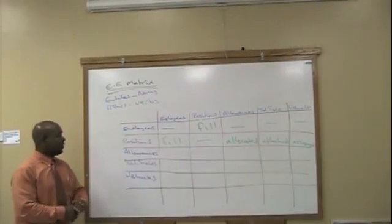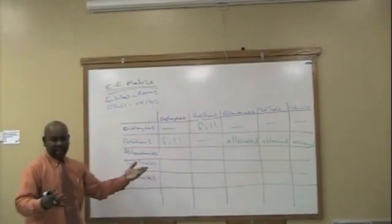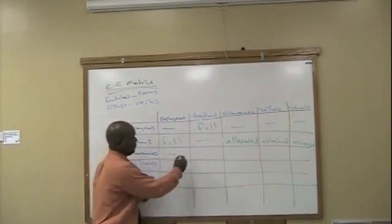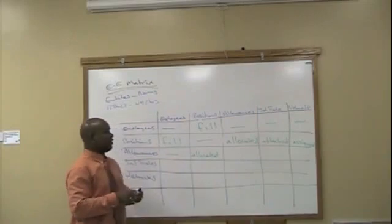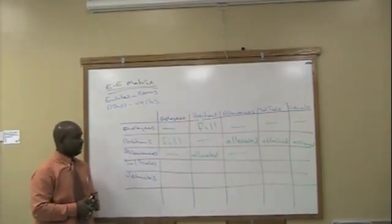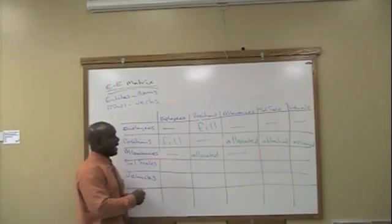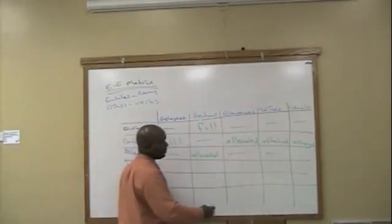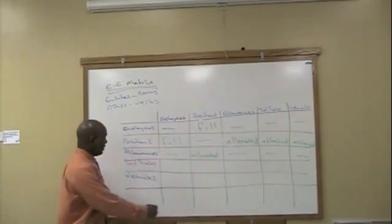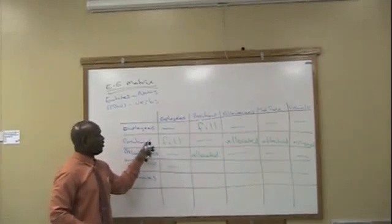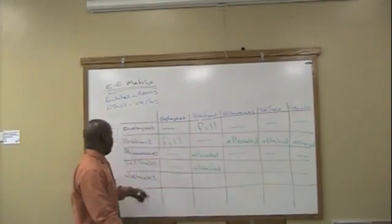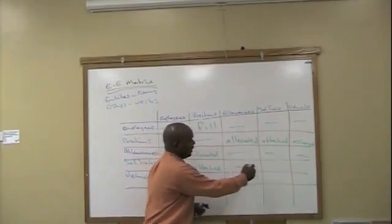Allowance and employee: look at the top — it will be exactly the same. Allowance and position: exactly the same. Is allowance related to allowance? In this case, no. Allowance and salary scale — and allowance and vehicle — no. So we can write back the same relationships from the top half.